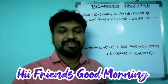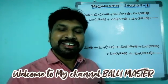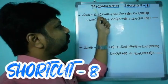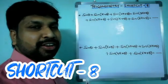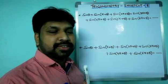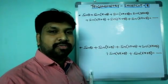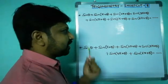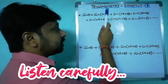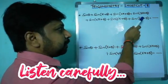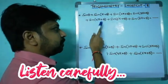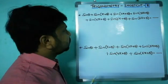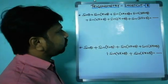Hi friends, good morning, welcome to my channel Balu Master. Today I'm going to discuss shortcut number eight on trigonometry. The question is: sin theta plus sin(pi plus theta) plus sin(2pi plus theta) plus sin(3pi plus theta) plus sin(4pi plus theta) plus sin(5pi plus theta) plus sin(6pi plus theta) equals dash. This kind of question, how to do it, is very very simple.